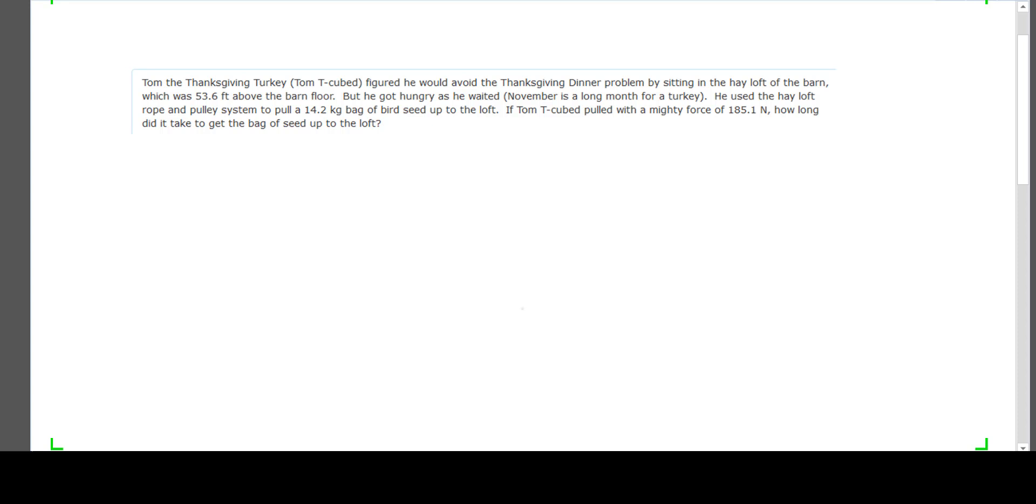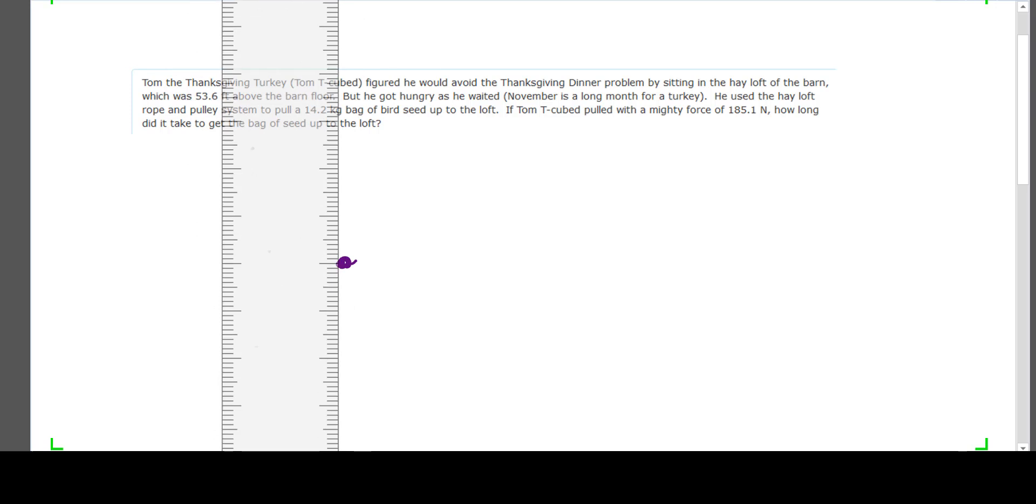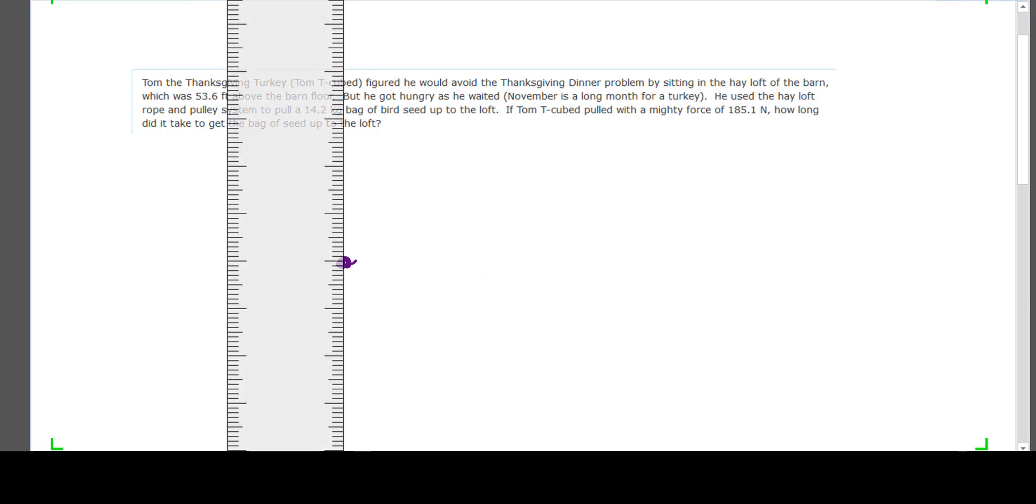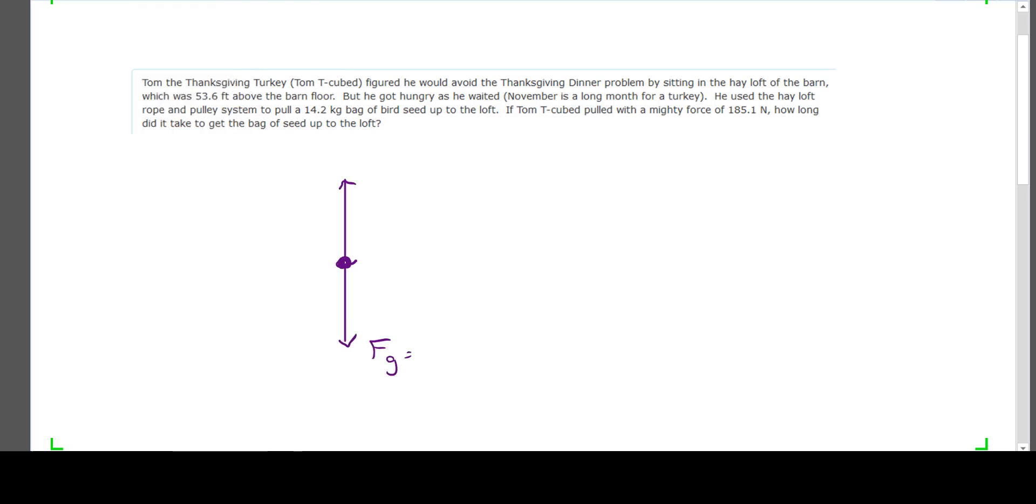Tom Thanksgiving turkey figured he'd avoid Thanksgiving dinner by sitting in the hayloft of the barn, which is 53.6 feet above the barn floor, but he got hungry as he waited. He used the hayloft rope and pulley system to pull a 14.2 kilogram bag of bird seed up to the loft. If Tom T. Cube pulled with a mighty force of 185.1 newtons, how long did it take to get the bag of seed up to the loft?